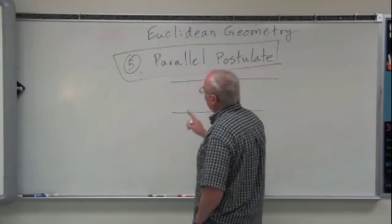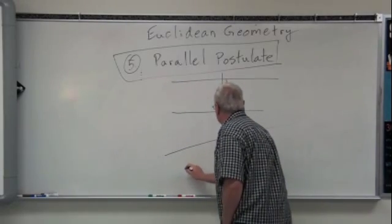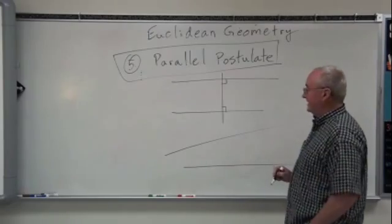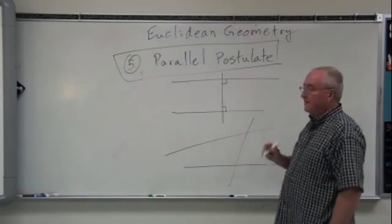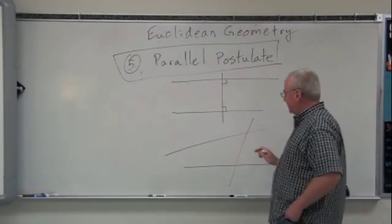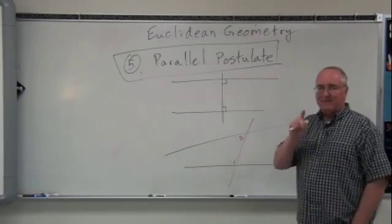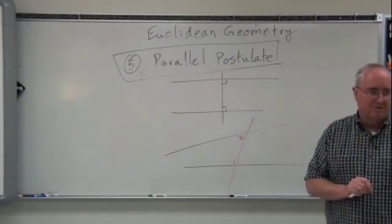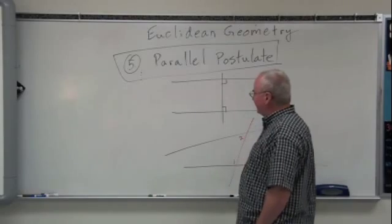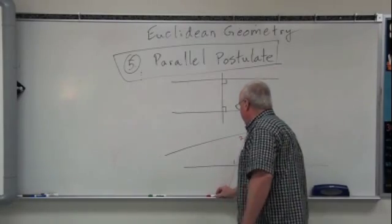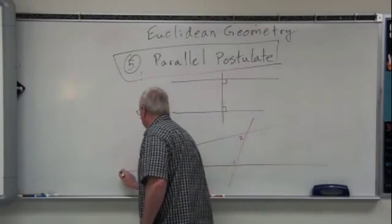In actuality, what Euclid said was this: if I have two lines and I intersect them with another line such that the interior angles on one side of the line — let's call them angle one and angle two — if those two angles added together are less than two right angles, then the two lines will somewhere on that same side intersect.